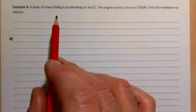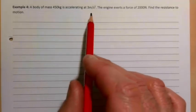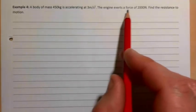A body of mass 450 kilograms is accelerating at 3 meters per second squared. The engine exerts a force of 2000 newtons. Find resistance to motion.